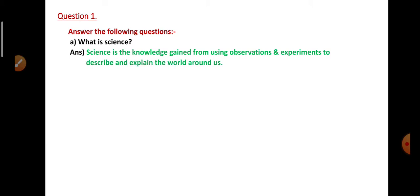The first question is: What is science? Answer: Science is the knowledge gained from using observations and experiments to describe and explain the world around us. Next question: What is chemistry?